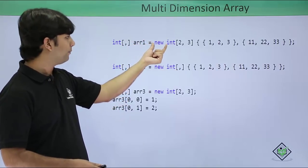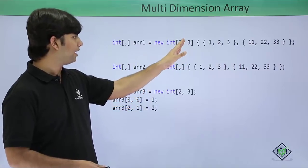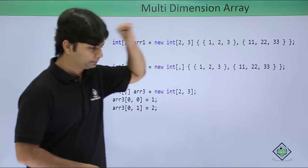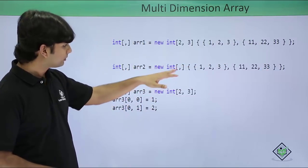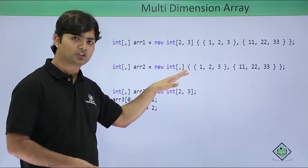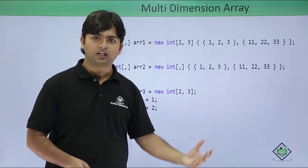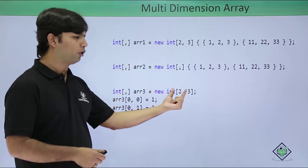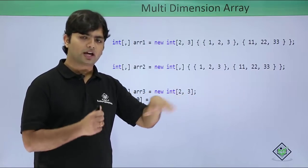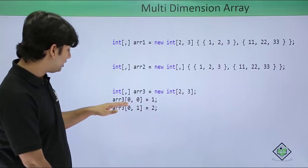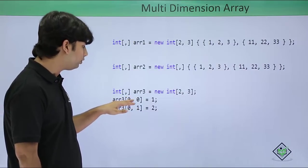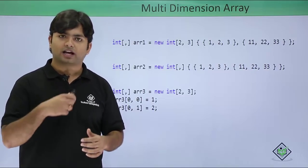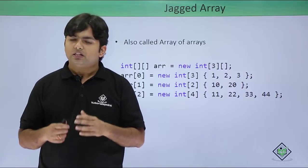'arr1' is the name of the array, and while allocating memory I have specified two rows and three columns — first row three elements, second row three elements. Similarly, if I don't specify the number of rows and columns, when I pass the values they will determine the size of the array. If elements are not initialized, everyone will be initialized with zero by default. Later I can change a value by passing the row and column index. This is how you define a multi-dimensional array.